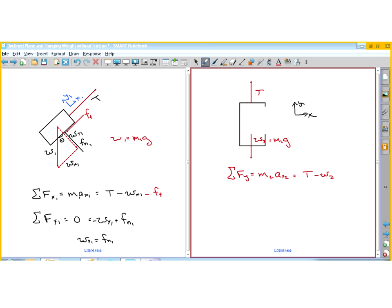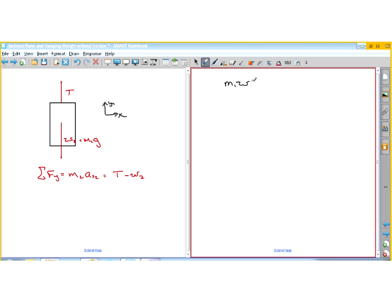So I'm going to write the two equations. I'm not going to just copy what I did before. So we have M1 times A sub X1 is equal to the tension minus W sub X1 minus the friction force. So I've got that one extra term on there. And the second equation is from the second object.